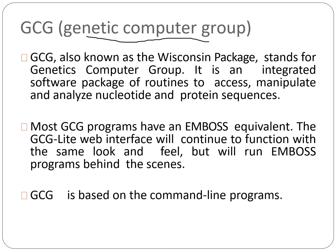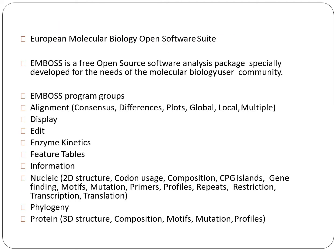We talked about GCG, which is Genetic Computer Groups. This is basically a software that stores different sorts of sequences — nucleotide or protein sequences — and it has an EMBOSS equivalent. It works on EMBOSS, which it operates under. It is based on command-line programs. GCG is also known as the Wisconsin Package.